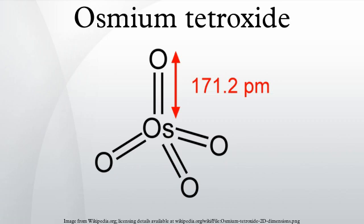OsO4 is expensive and highly toxic, making it an unappealing reagent to use in stoichiometric amounts. However, its reactions are made catalytic by adding reagents to re-oxidize the OsO6 by-product back to OsO8. Typical reagents include H2O2, N-methylmorpholine N-oxide, and K3Fe(CN)6, as these will not react with the alkenes on their own.